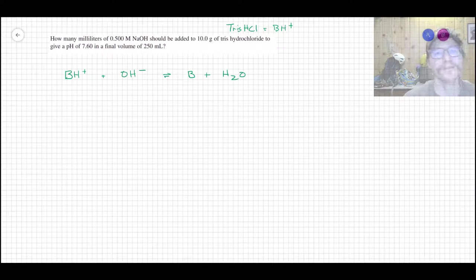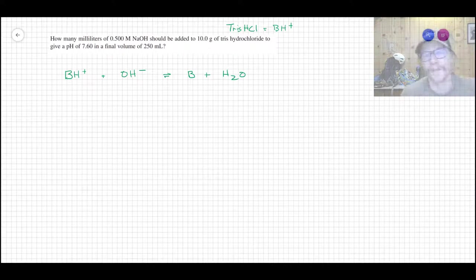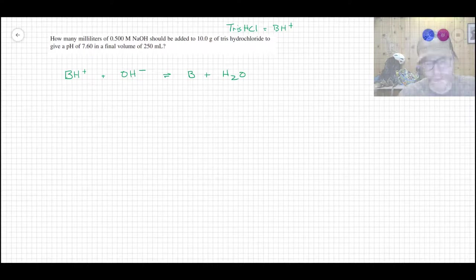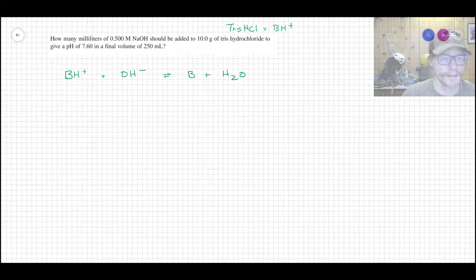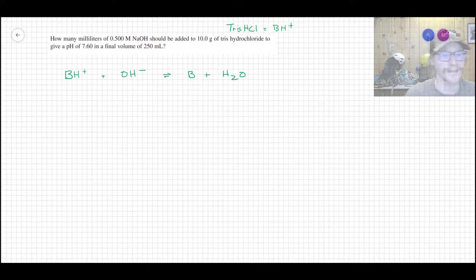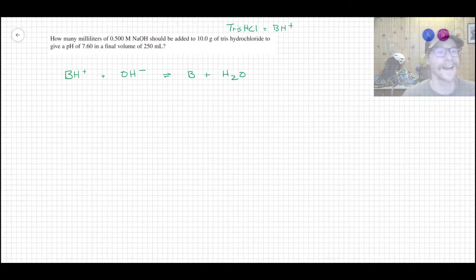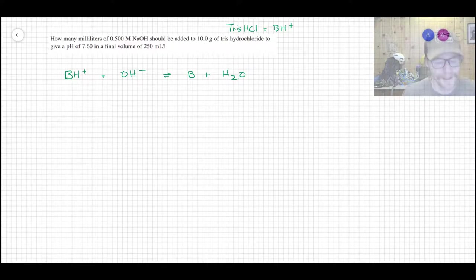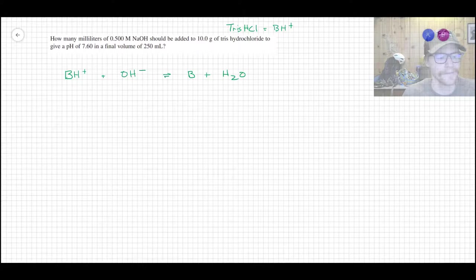So this situation is slightly different than what we talked about before where you have some amount of both the acid and the base. What's more common practically is that you have either the weak base or the weak acid and then you have a strong acid or base that you're going to add to create some amount of the conjugate just because we often don't have both the acid and the base pair in a practical form for every single buffer but it can be easily generated.